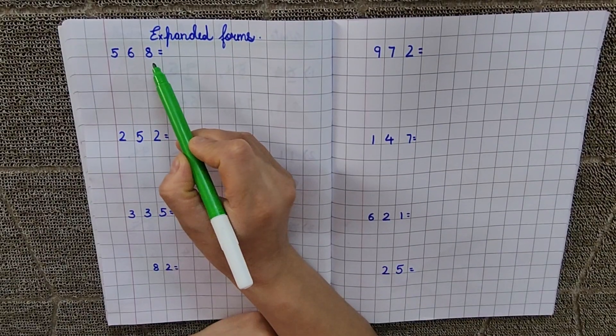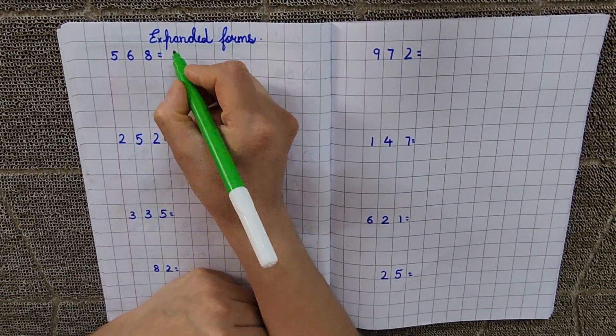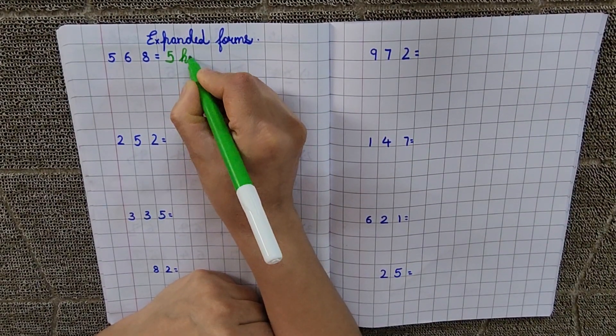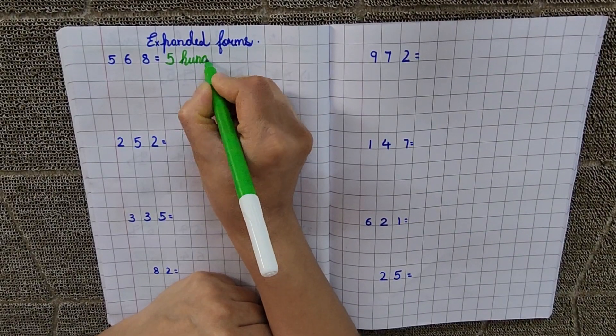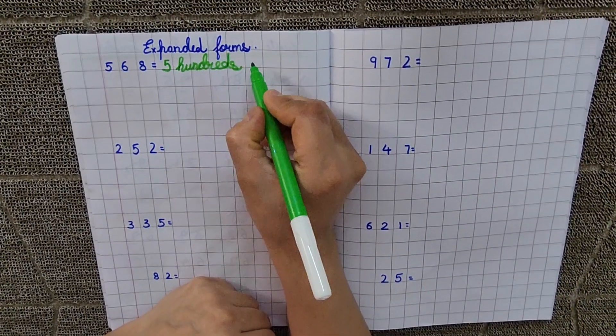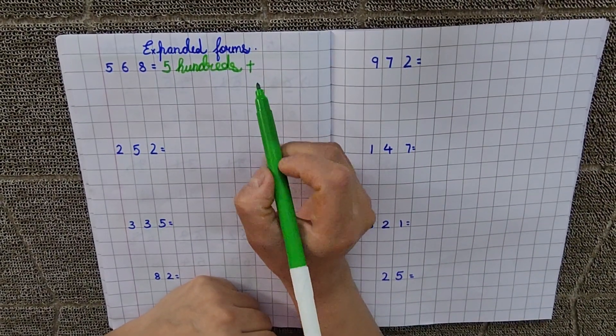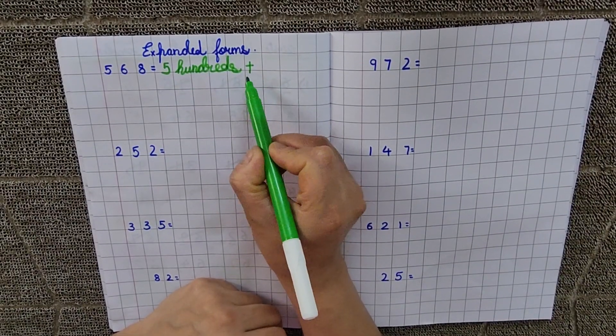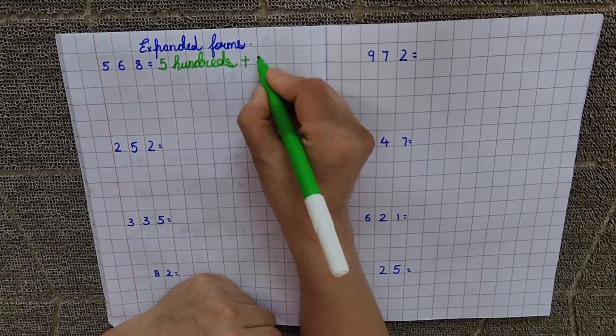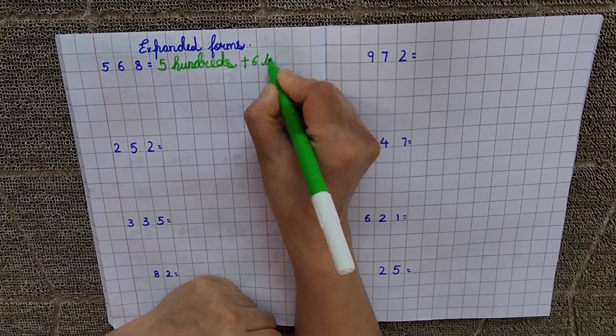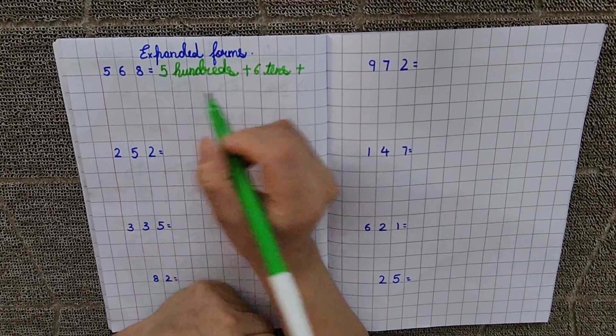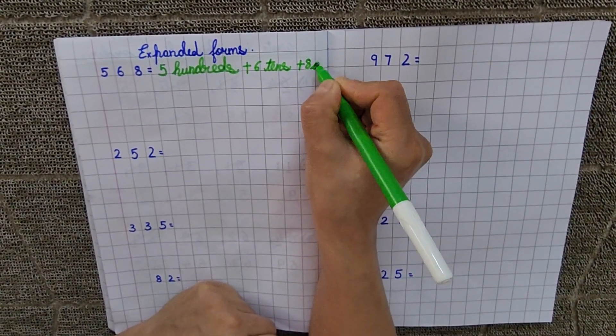So, first we will write 5 hundreds plus, please don't forget to put this sign, right? Plus, now what is the place value of 6? 10's. 6 tens plus 8 ones.